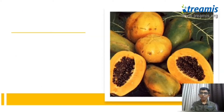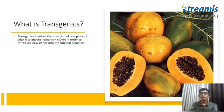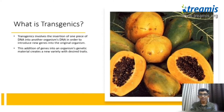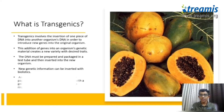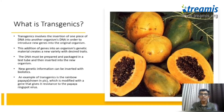What is transgenics? Transgenics involves the insertion of one piece of DNA into another organism's DNA in order to introduce new genes into the original organism. This addition of genes creates a new variety with desired characteristics. The DNA must be prepared and packaged carefully in a test tube and then inserted into the new organism using biolistics. The rainbow papaya, shown on screen, is modified with a gene that gives it resistance to the papaya ringspot virus.